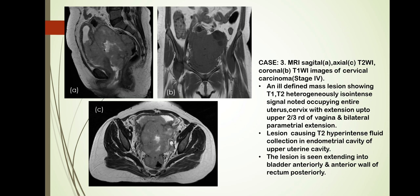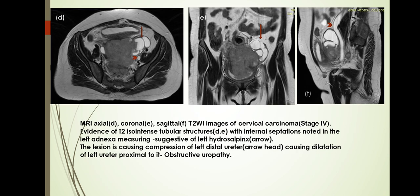This is the third case, staged under stage 4. Images A and C are the sagittal and axial T2-weighted images, and B is the coronal T1-weighted image, showing an ill-defined mass lesion with T1-T2 heterogeneously iso-intense signal, occupying the entire uterus and cervix with extension up to the upper two-thirds of vagina and bilateral parametrial extension. The lesion is causing T2 hyper-intense fluid collection in the endometrial cavity, and extends into the bladder anteriorly and anterior wall of the rectum posteriorly. Images D (axial), E (coronal), and F (sagittal) show T2 iso-intense tubular structures with internal septations in the left adnexa, measuring consistent with left hydrosalpinx (shown with arrow).